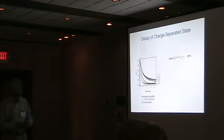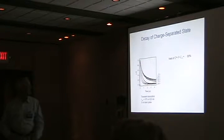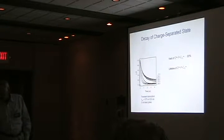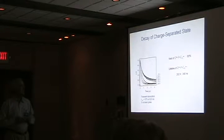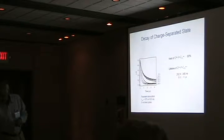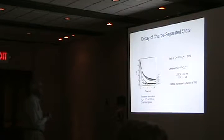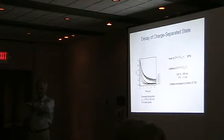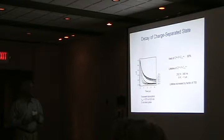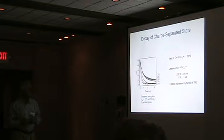The yield is high — about 88% — and some other molecules achieve 100%. The lifetime at room temperature is about 340 nanoseconds — a large increase, about 700 times longer than the dyad. We achieve this by moving the charges apart, decreasing the electronic coupling, and thereby slowing down charge recombination. Now you have a chance to think about how to get the stored energy out of that molecule.